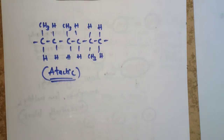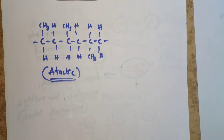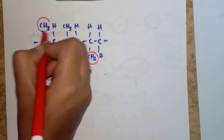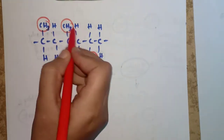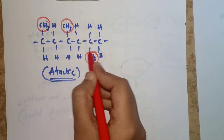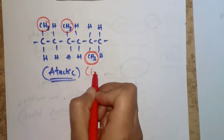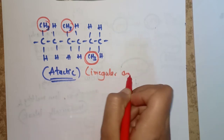Now we need to know about atactic and isotactic polymers. In atactic polymers, the side groups such as CH3 show an irregular arrangement — for example, two CH3 groups on the upper side and one on the lower side, giving an irregular spatial arrangement.